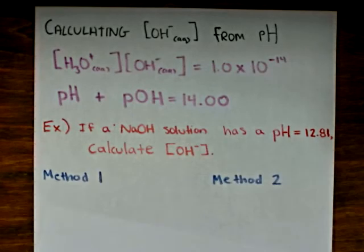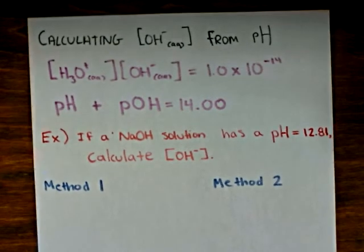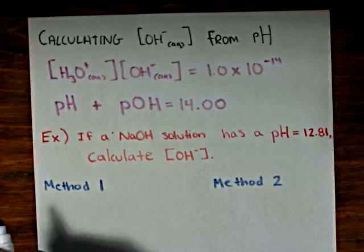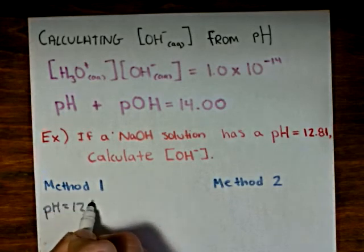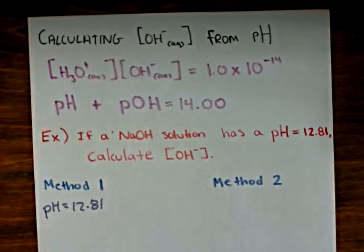In the first method, we will use the second expression to calculate the pOH. We know that the pH is 12.81. That's what was given to us.